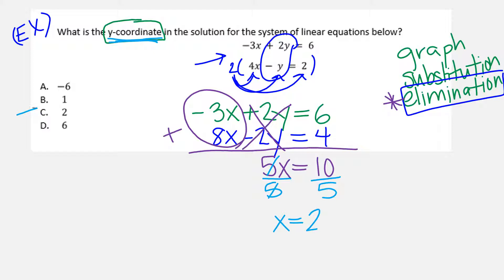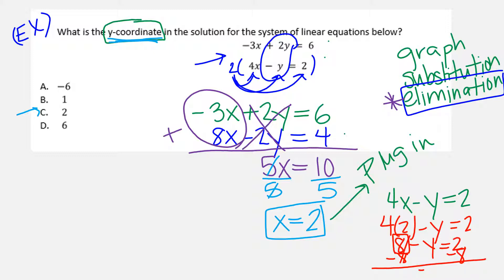Good testing strategy: notice they give you 2 as an answer to trick you, because this is the X value. Now we need to figure out Y. Plug this into any equation. I'll pick 4X minus Y equals 2. Four times 2 is 8 minus Y equals 2. I bring that 8 over: negative Y equals 2 minus 8, which is negative 6. Divide by negative 1, so Y equals 6. The answer is D.